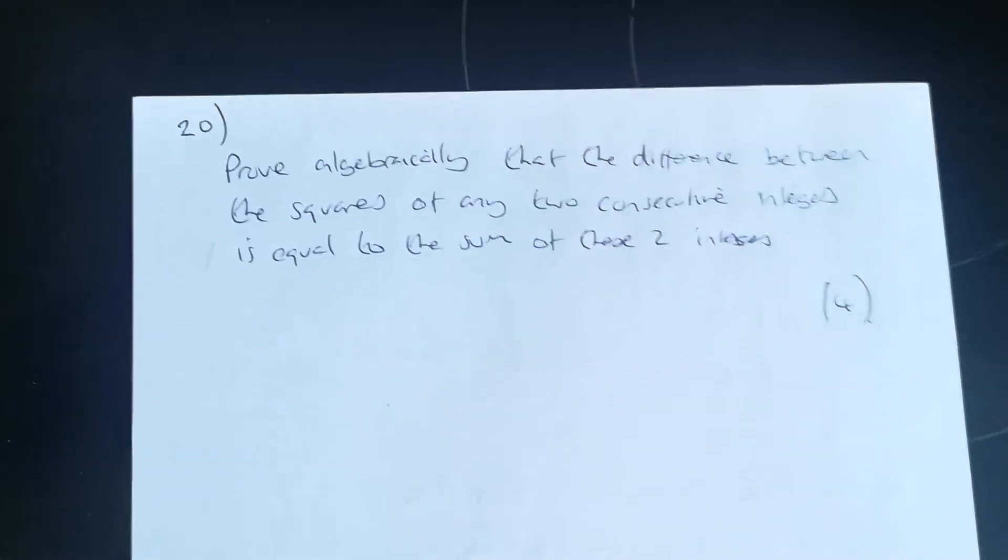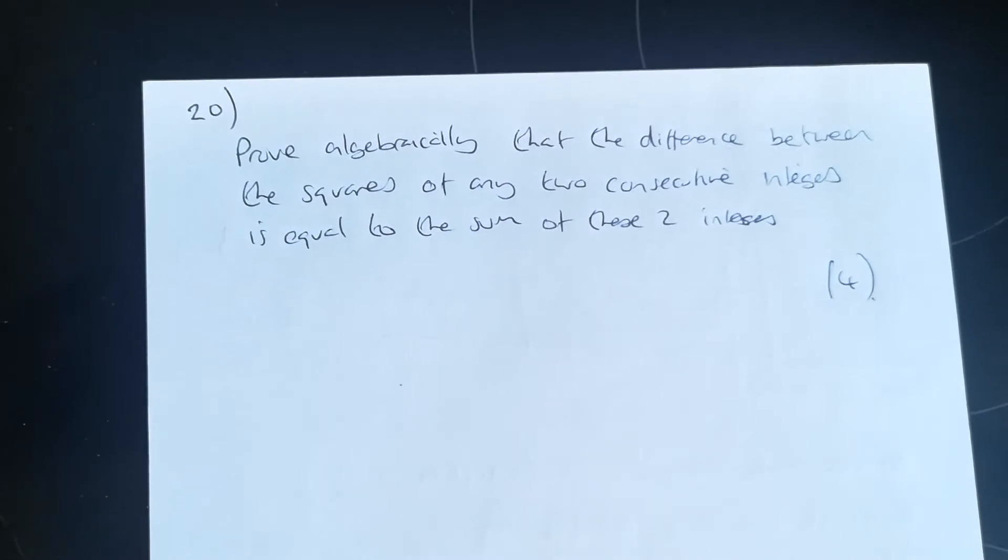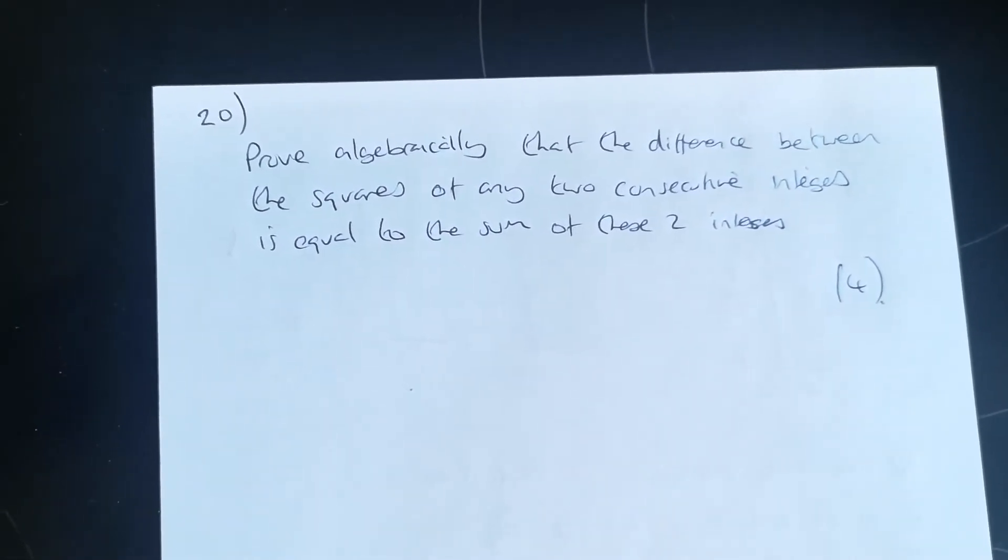Hey guys, question 20. Prove algebraically that the difference between the squares of any two consecutive integers is equal to the sum of these two integers.